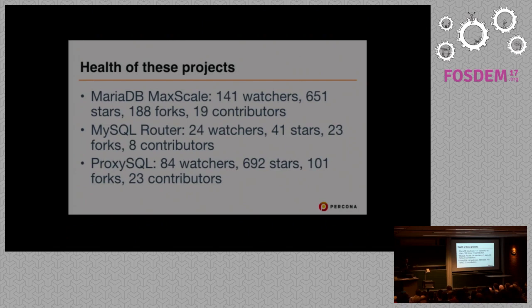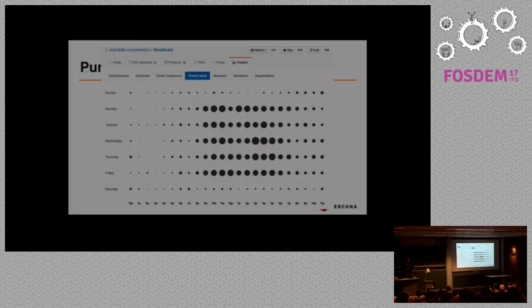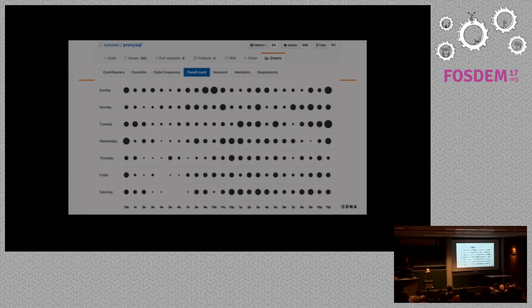Do these statistics tell you that a project is healthy? Kind of. If you see regular commits and issues being closed, it shows that people care. GitHub has this very interesting thing called punch card. The punch card for MaxScale shows lots of activity from Monday to Friday during working hours — seems fair. The punch card for ProxySQL shows activity all the time, not just because Rene is madly typing away — there are many contributors. This is the spirit of open source: you work on it not just when you're paid to, but because you love it.